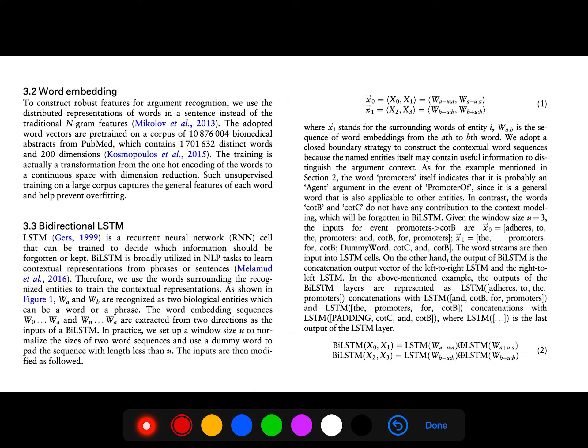So we are using bi-LSTM, but here the word embedding sequences w0-tilt-wa and w-a-tilt-wa are two different directions because it's bi-directional LSTM. So this X-i stands for the surrounding words of entity i. W-a-b is the sequence of words from a-th to b-th word.